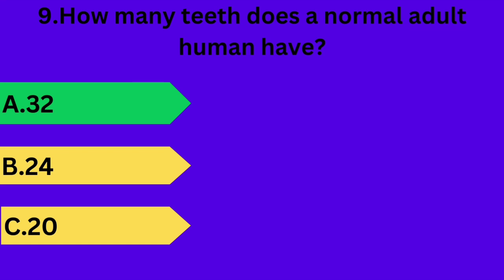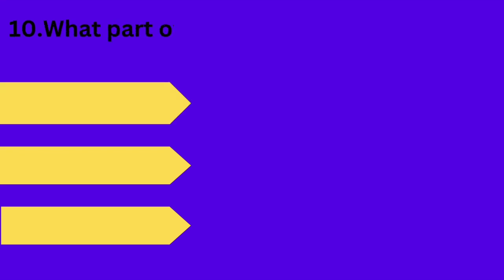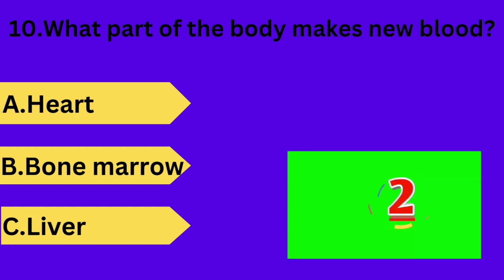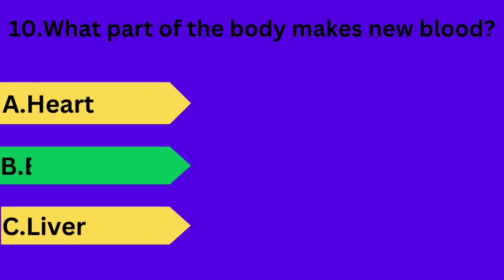And next question is: what part of the body makes new blood? Option A: heart. Option B: bone marrow. Option C: liver. Your time starts now. Answer is option B: bone marrow.